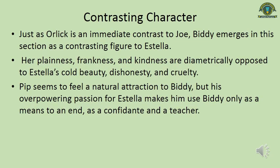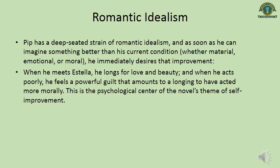Just as Orlick is an immediate contrast to Joe, Biddy emerges in this section as a contrasting figure to Estella. Her plainness, frankness, and kindness are diametrically opposed to Estella's cold beauty, dishonesty, and cruelty. Pip seems to feel a natural attraction to Biddy, but his overpowering passion for Estella makes him use Biddy only as a means to an end — as a confidant and as a teacher. Pip has a deep strain of Romantic Idealism, and as soon as he can imagine something better than his current condition, he immediately desires that improvement. Whenever he meets Estella, he longs for love and beauty. When he acts poorly, he feels powerful guilt amounting to a longing to have acted more morally. This is the psychological center of the novel's theme of self-improvement.